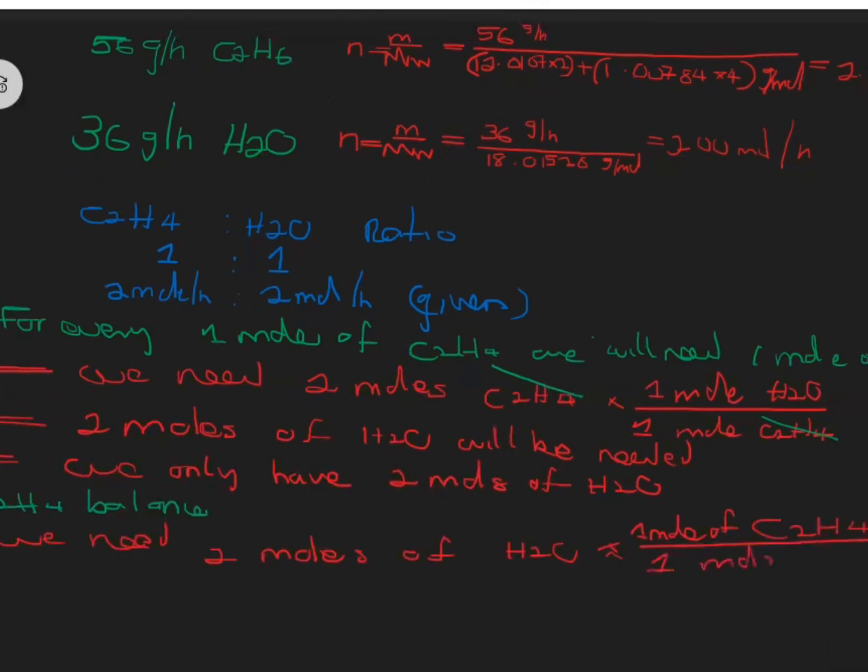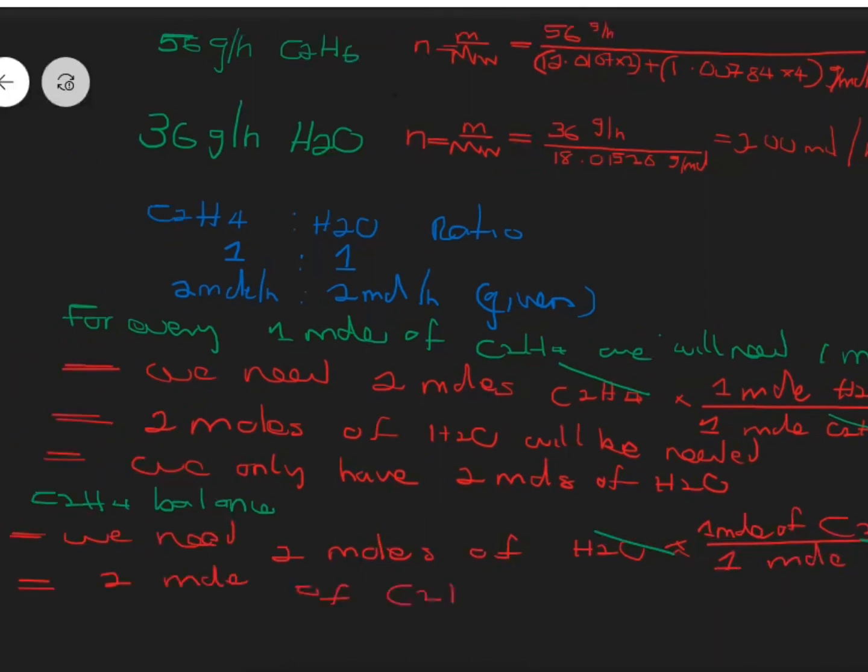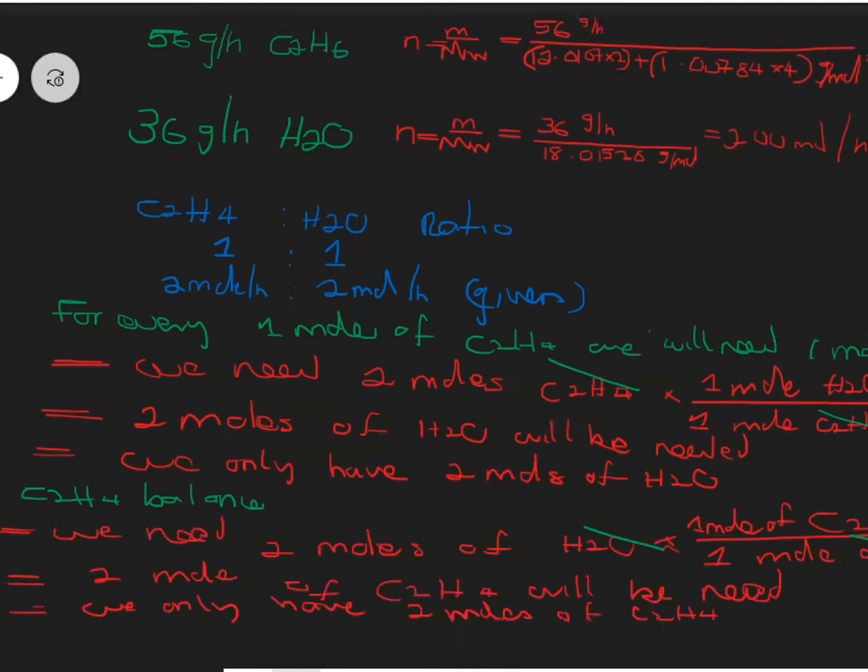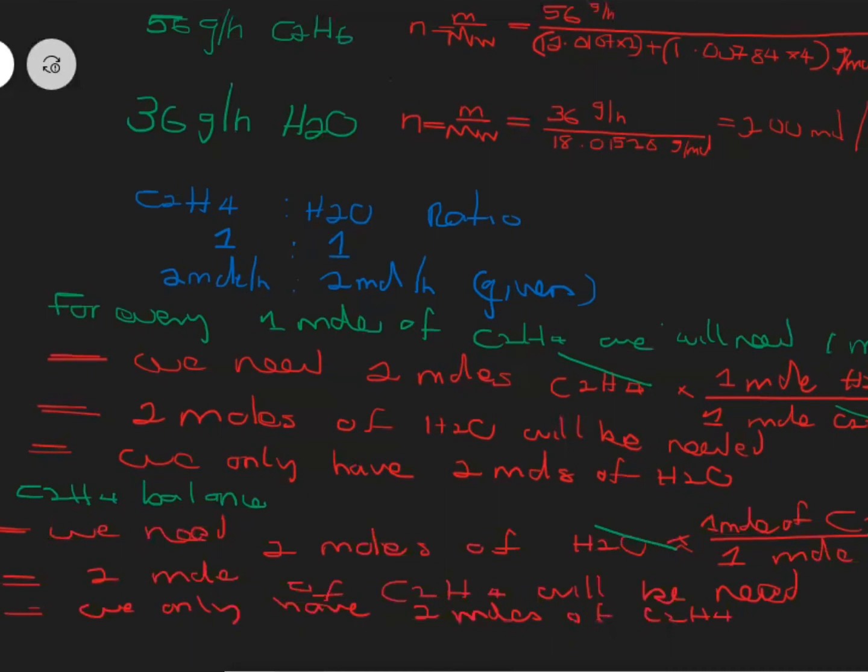Using ratios, my water will cancel out. Also here, 2 moles of ethylene will be needed and we have 2 moles of ethylene. It is also not a limiting reagent, nor is it the excess. We have stoichiometric ratio.